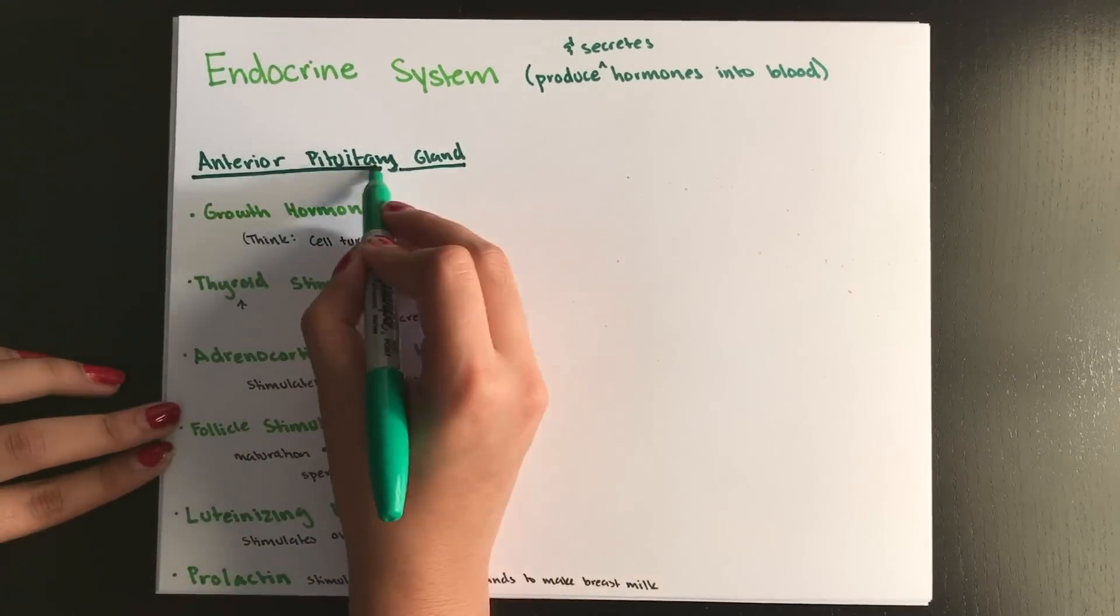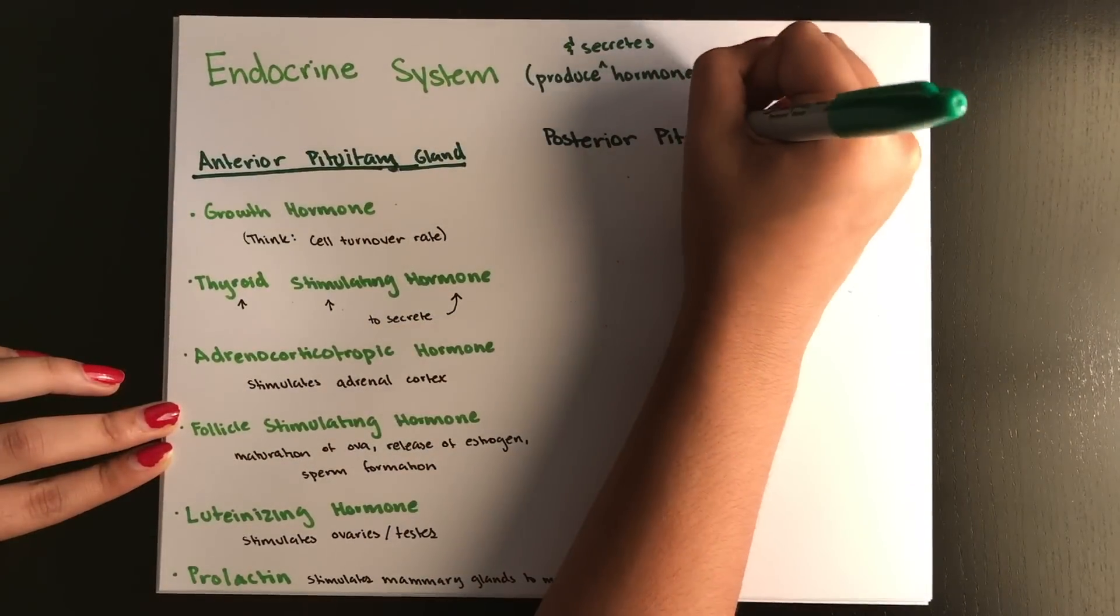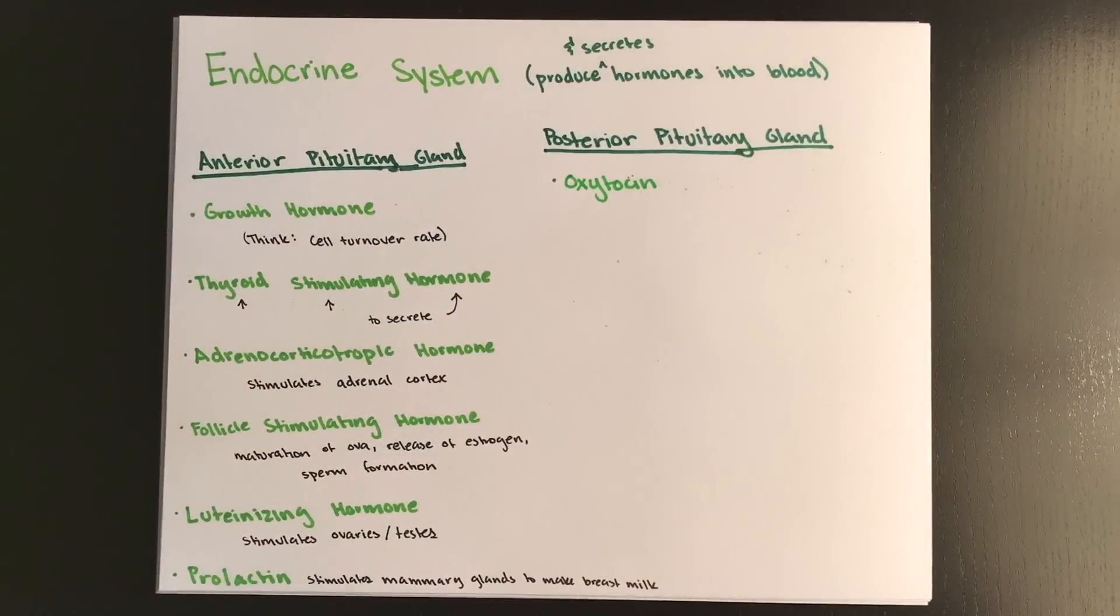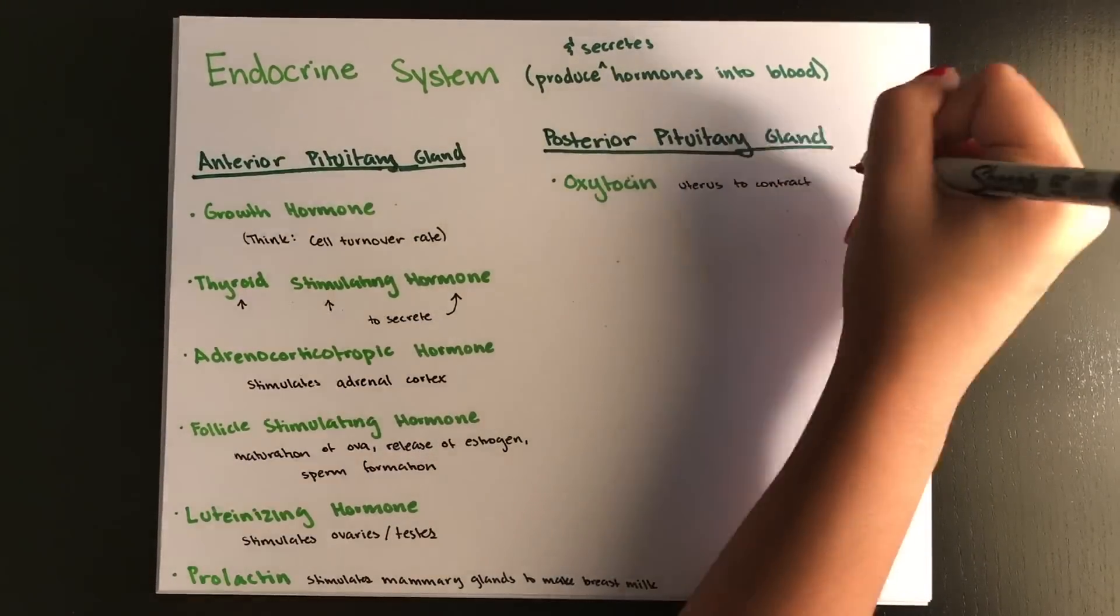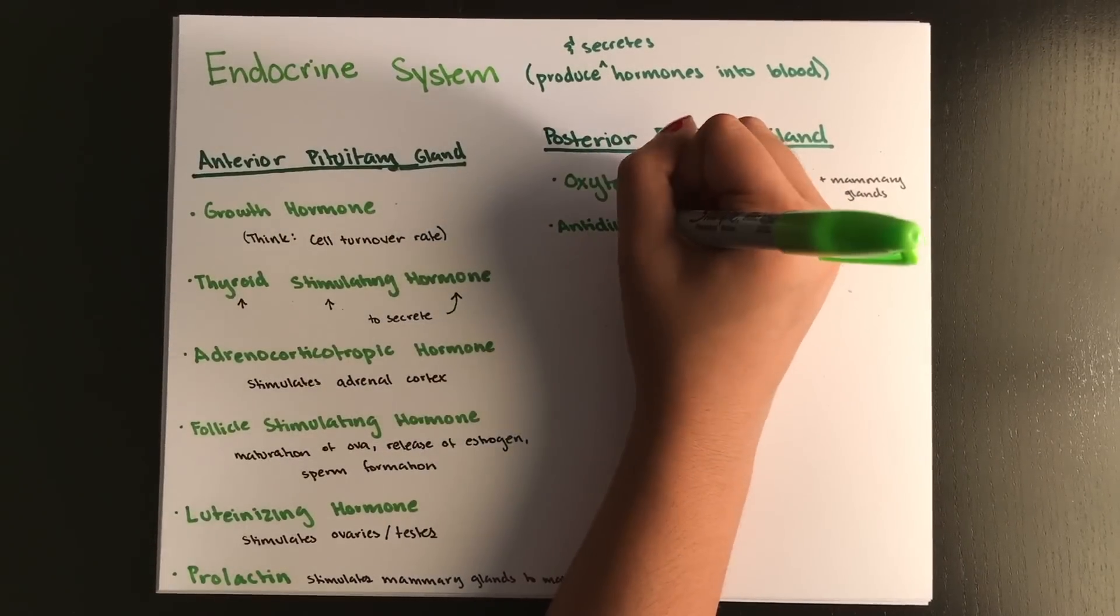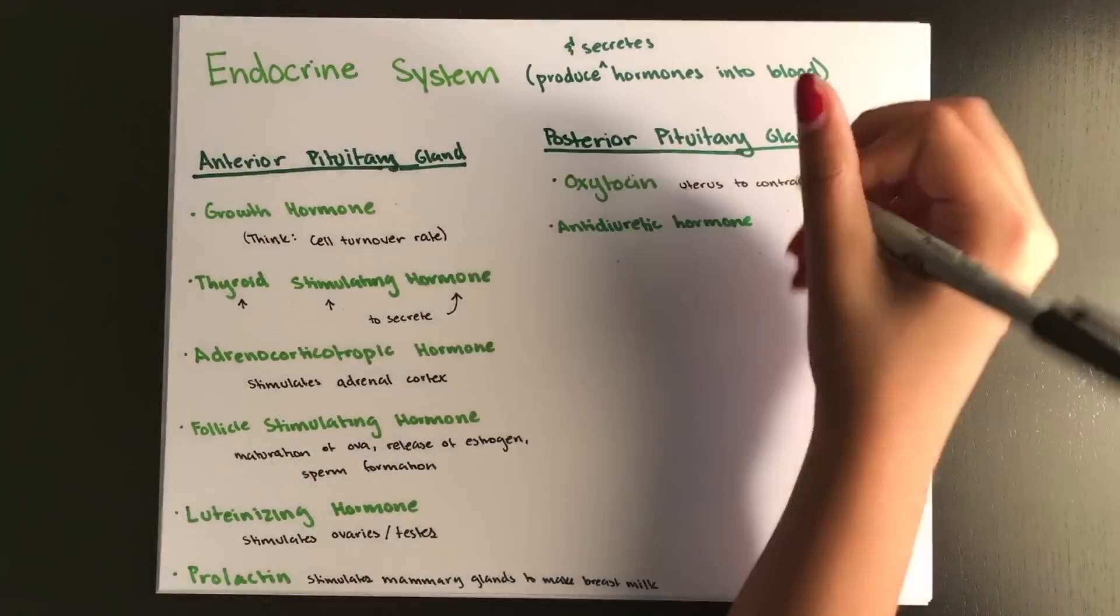Now, the posterior pituitary gland stores and secretes two hormones. Oxytocin, which causes the uterus to contract during childbirth, and the mammary glands to release milk. And the antidiuretic hormone, which is also called vasopressin, and this causes the kidneys to retain water.